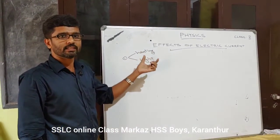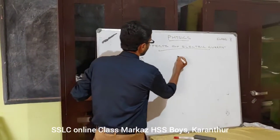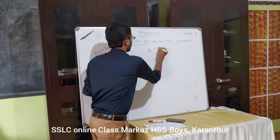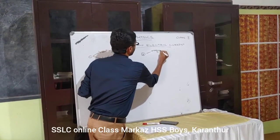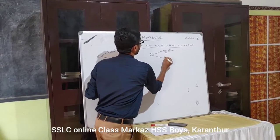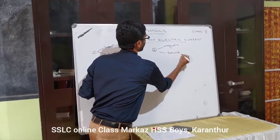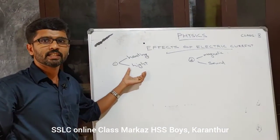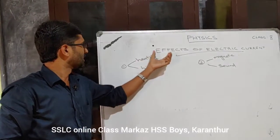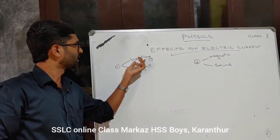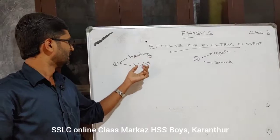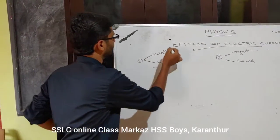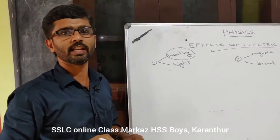Two more effects will come in the second chapter: the magnetic effect and the sound effect. So in the first chapter we discuss the heating effect and the light effect. First of all, we will discuss the heating effect of electric current.